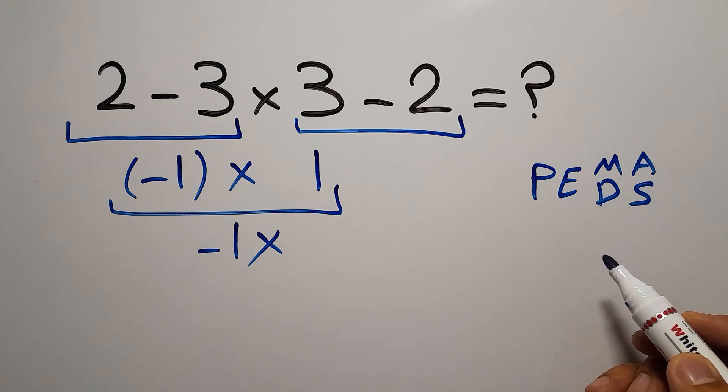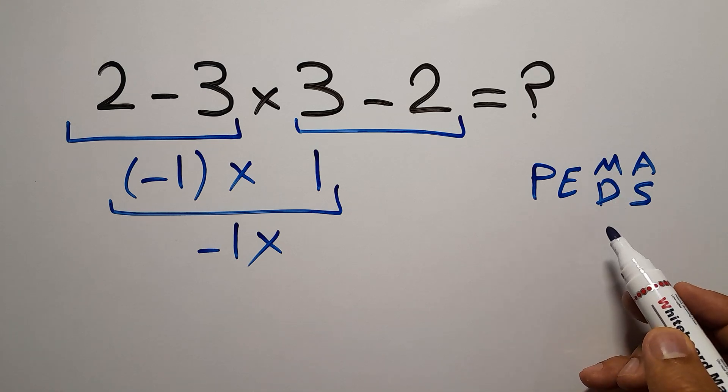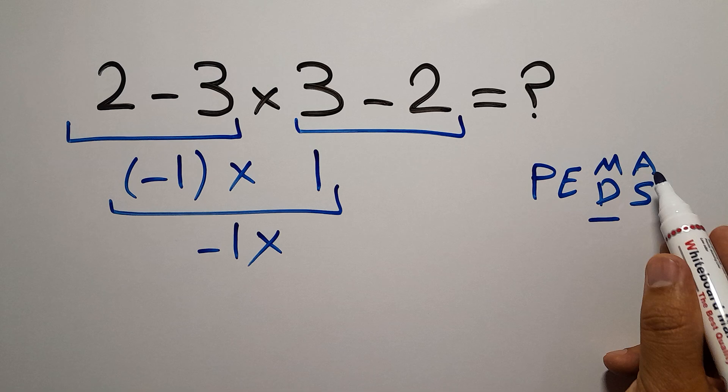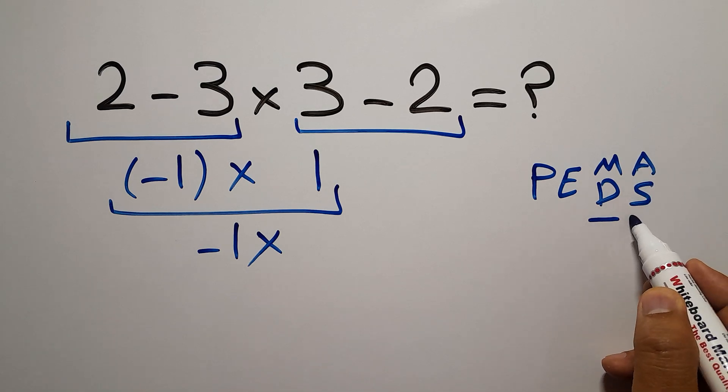Remember that multiplication and division have equal priority and we have to work from left to right. And the same applies to addition and subtraction.